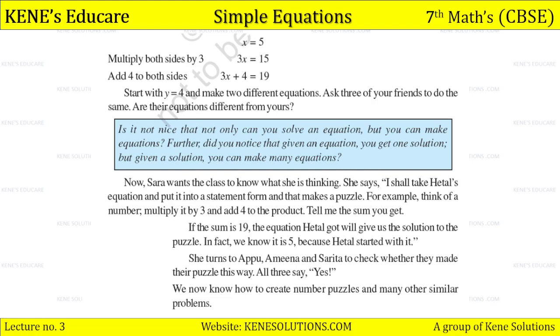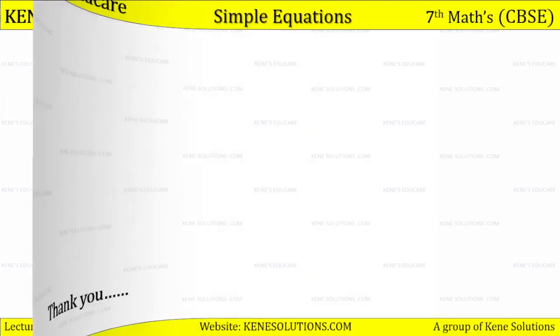Isn't it nice that not only can you solve an equation, but you can make equations also? Further, did you notice that given an equation, you get one solution, but given a solution, you can make many equations? Now Sarah wants the class to know what she is thinking. She says, I shall take Hetal's equation and put it into a statement form, and that makes a puzzle. For example: think of a number, multiply it by 3, and add 4 to the product. Tell me the sum you get. So if your sum is 19, the equation Hetal got will give us the solution to the puzzle. In fact, we know it is 5 because Hetal started with it. So she has turned to others to check whether they made their puzzles this way, and all three say yes. So we now know how to create number puzzles and many other similar problems.